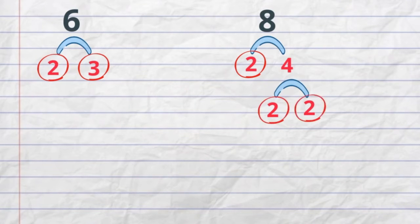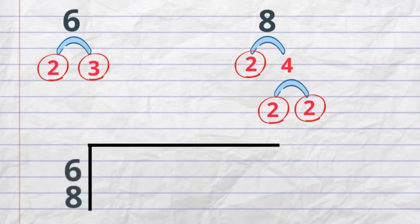So now we have all the prime numbers. The next thing we need to do is create a prime factorization chart. So I will write the prime numbers for 6, which is 2 and 3, and then the prime numbers for 8.